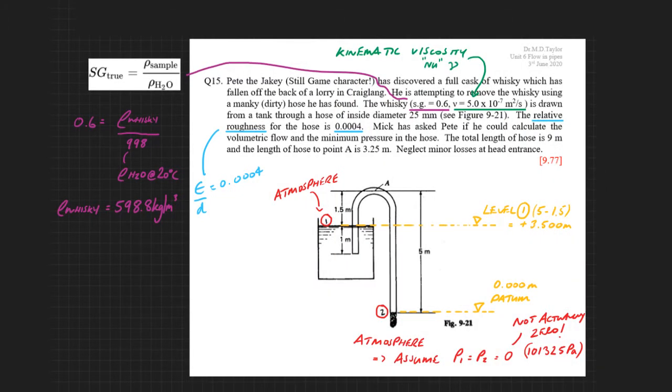Pete the JK has found a full cask of whisky behind the Klansman and he's trying to remove the whisky using a manky hose he's found. The whisky is drawn from the tank through a hose of inside diameter 25 millimeters. The relative roughness of the hose is 0.0004. Mick has asked Pete if he could calculate the volumetric flow and the minimum pressure in the hose because Pete's concerned about the siphon and whether or not this is going to work. The total length of hose is 9 meters and the length of the hose to point A is 3.25 meters.